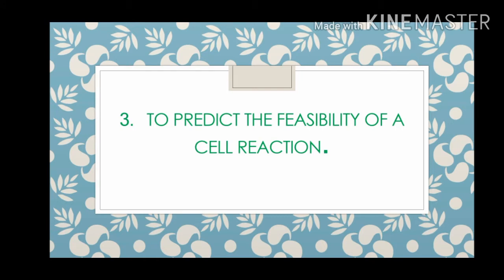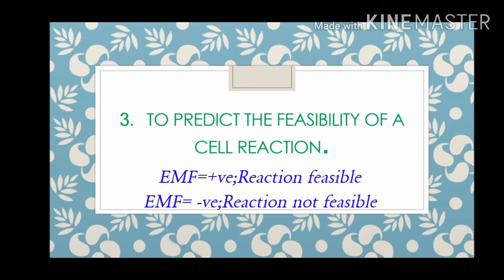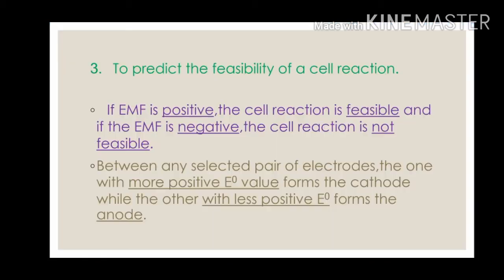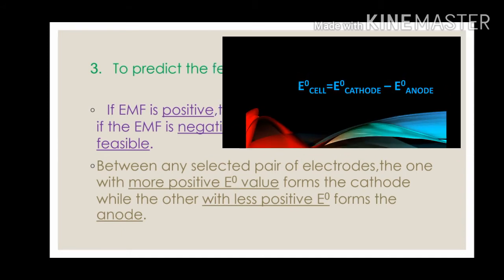The third application is to predict the feasibility of a cell reaction — that is, whether a cell reaction is possible. For a cell reaction to be feasible, the standard EMF of the cell should be positive. E0 cell is equal to E0 cathode minus E0 anode.